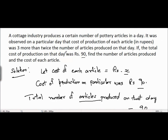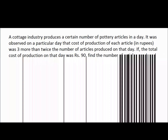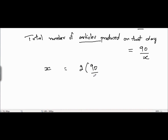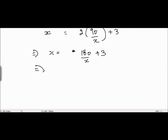Now check the condition given. It was observed that the cost of production of each article, x, is 3 more than twice the number of articles produced. Twice the number of articles produced is 2 times 90 divided by x. It's given that the cost of production of one article is 3 more than twice the articles produced on that day, so we add 3. This gives us: x equals 180 divided by x plus 3.